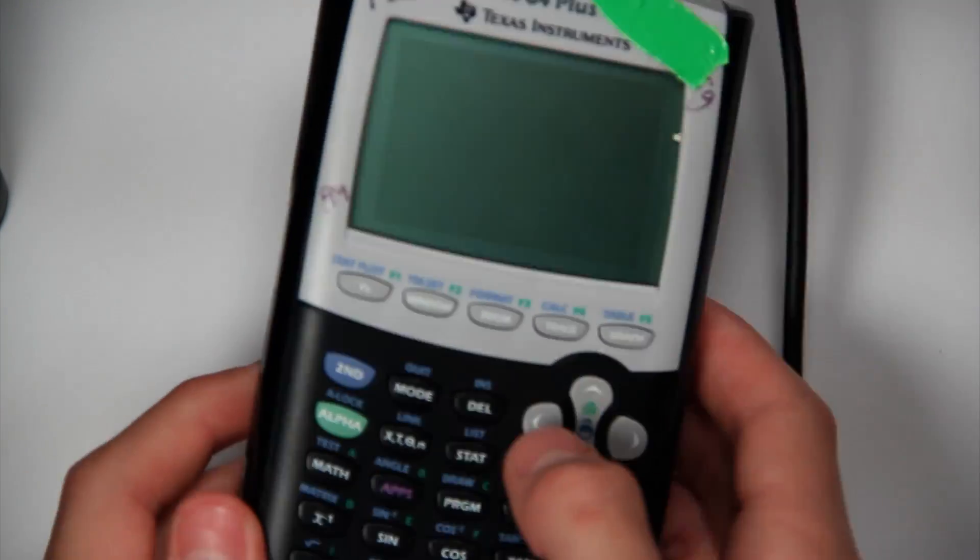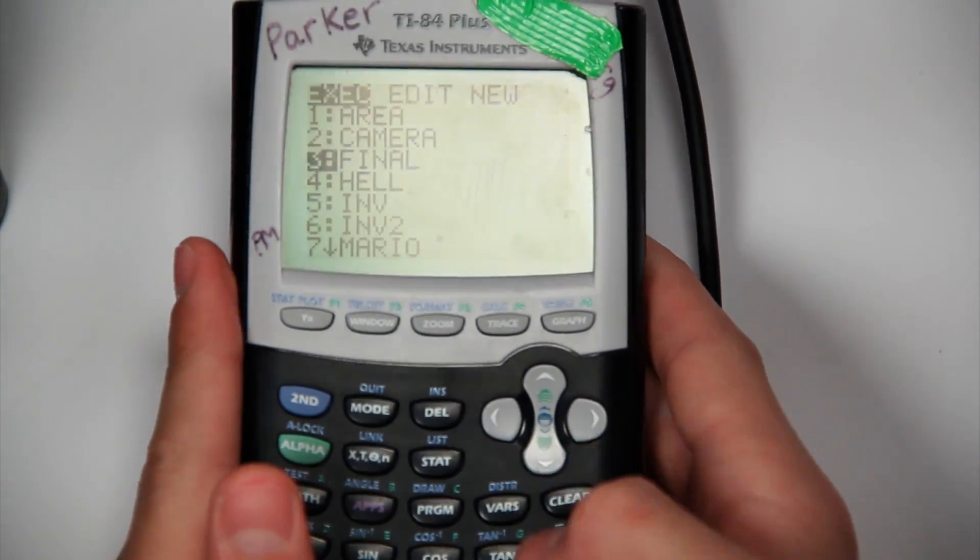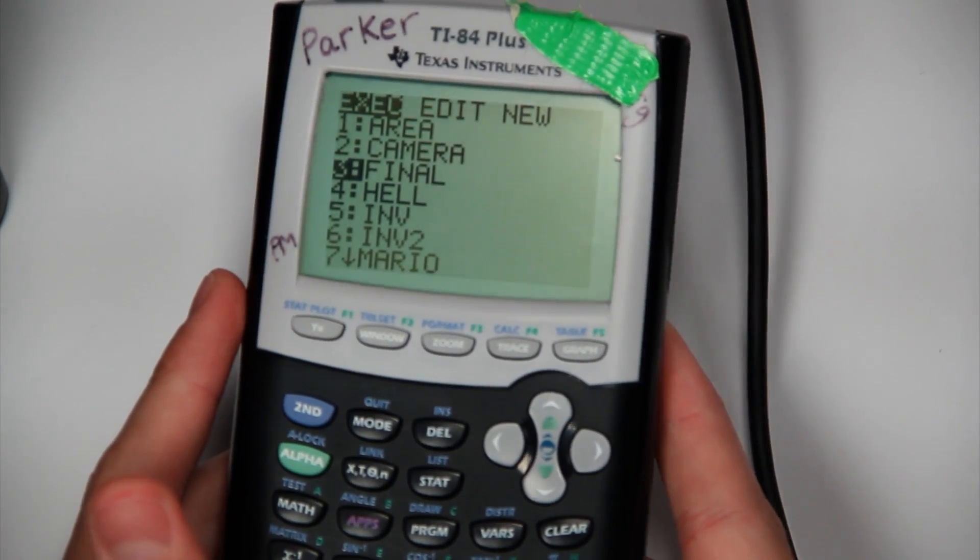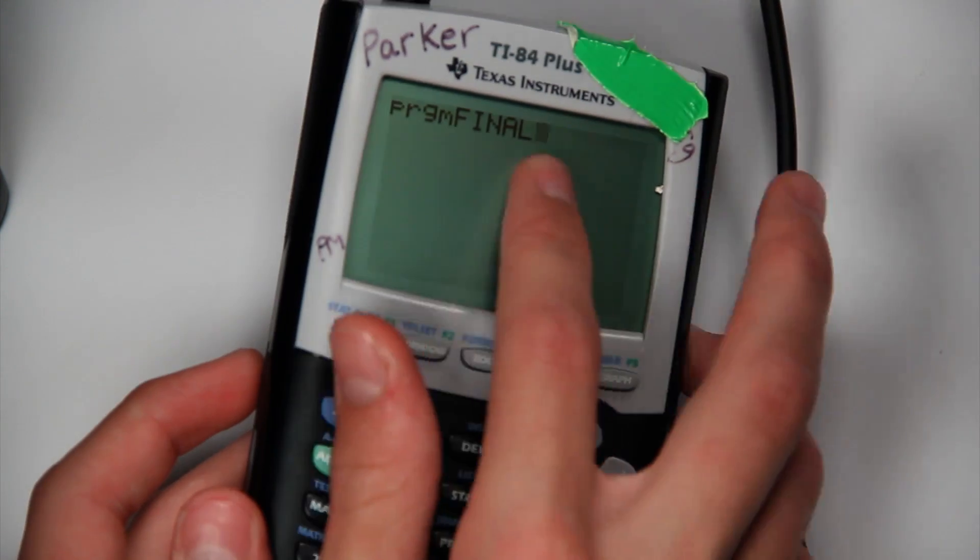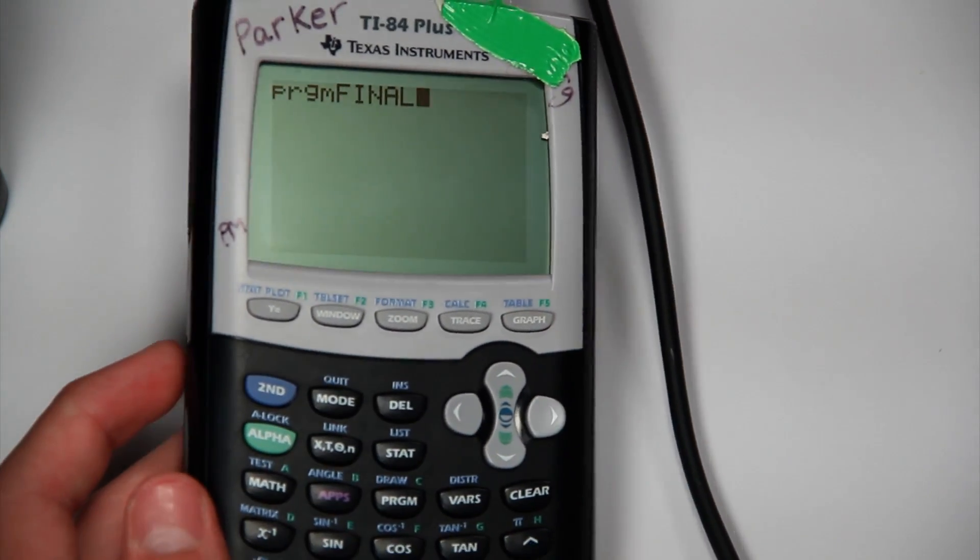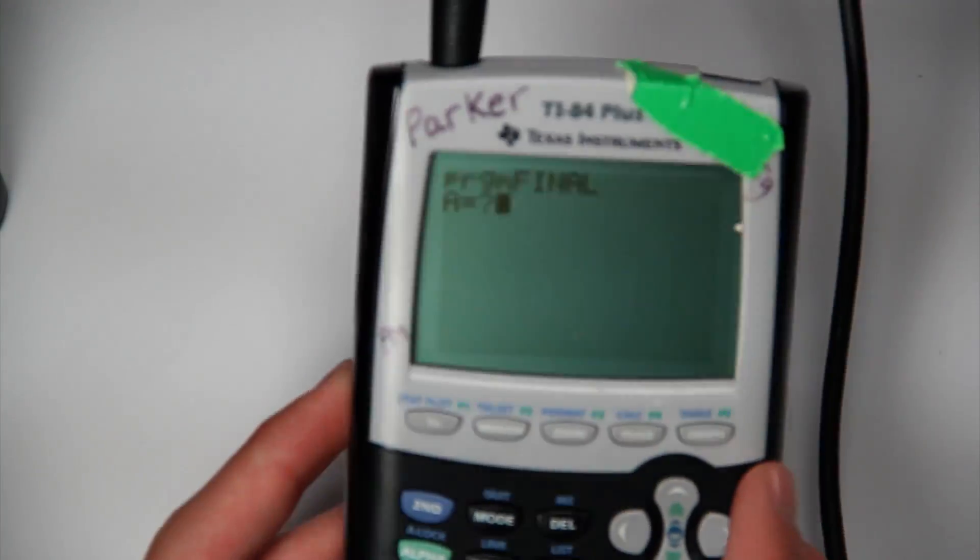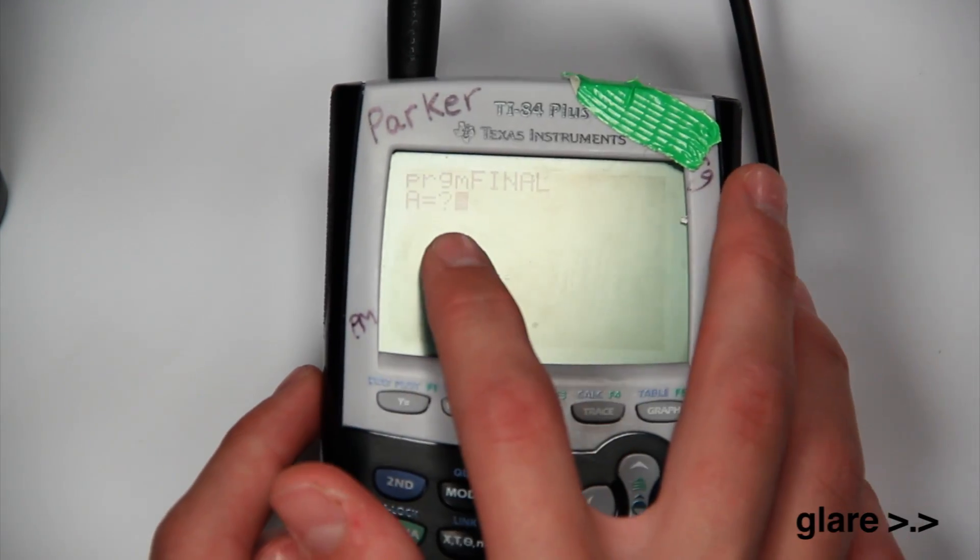So once you have your camera connected, you're going to want to go back into programs and select your program which you just programmed. And then it's going to say program what you named it. Then you're going to hit enter. And it's going to show you A equals question mark.